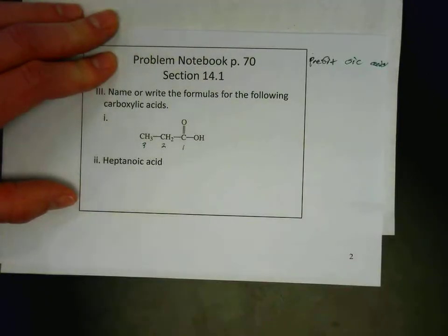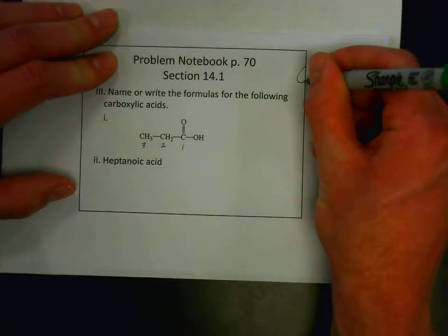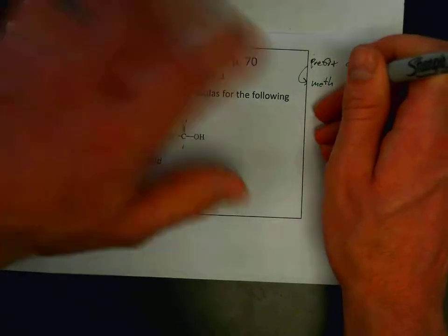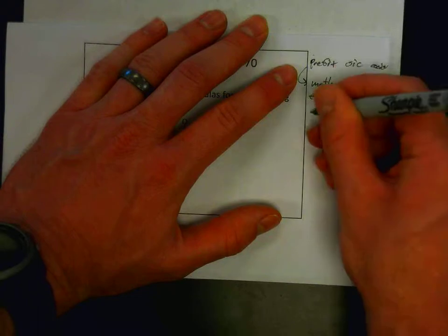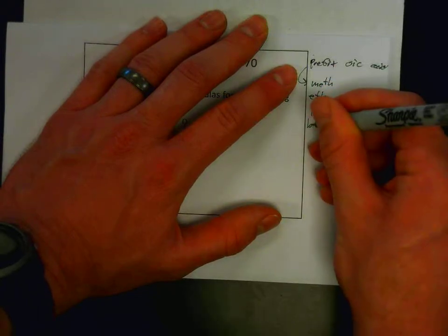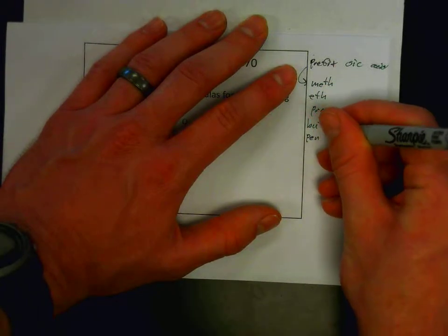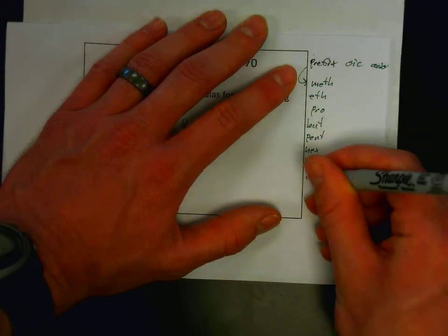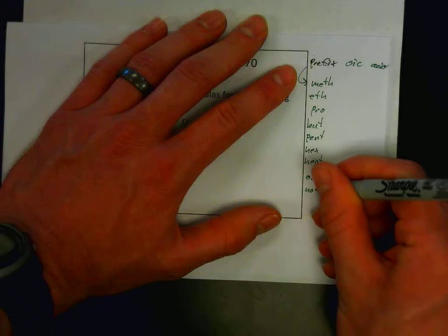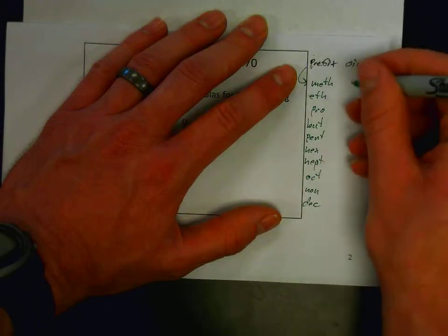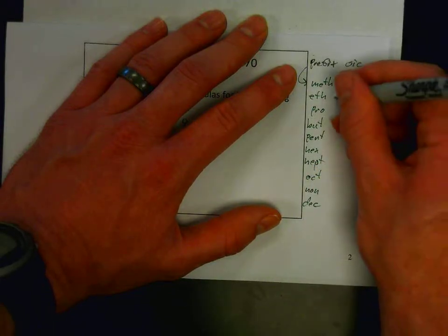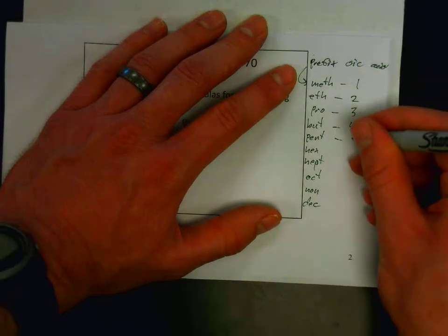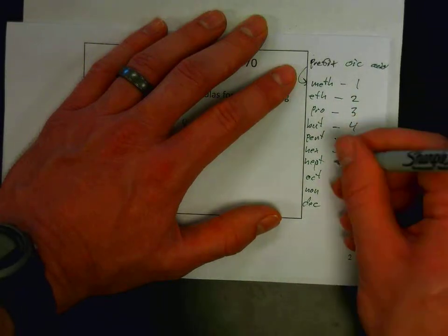Those prefixes are meth, eth, pro, but, pent, hex, hept, oct, non, and dec. Meth stands for one carbon, eth is two, pro is three, but is four, pent is five, hex is six, hept seven, oct eight, non nine, and dec 10.